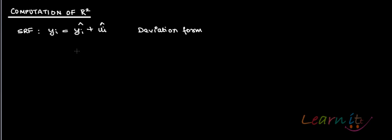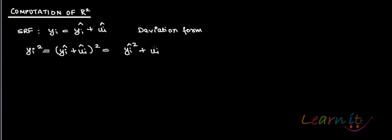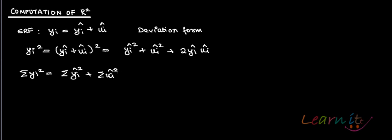It is easier to deal with this computation in deviation form. Squaring both sides, you will get yi-squared equals (yi-hat plus ui-hat) squared, which equals yi-hat-squared plus ui-hat-squared plus 2·yi-hat·ui-hat. Now summing both sides, you get: summation of yi-squared equals summation of yi-hat-squared plus summation of ui-hat-squared plus 2 times summation of yi-hat·ui-hat.